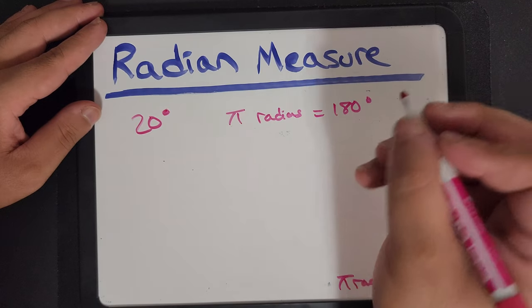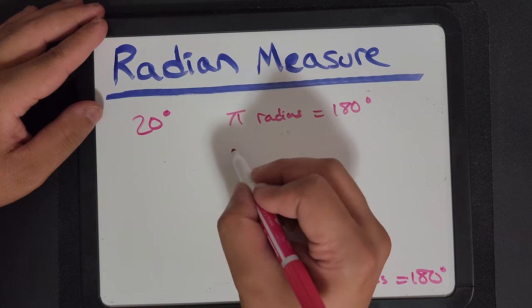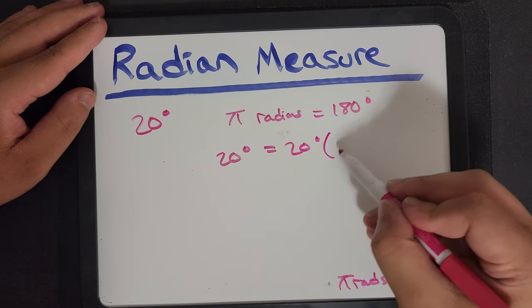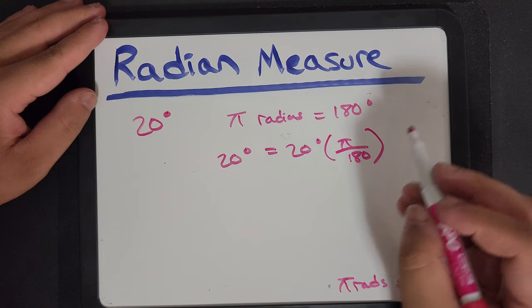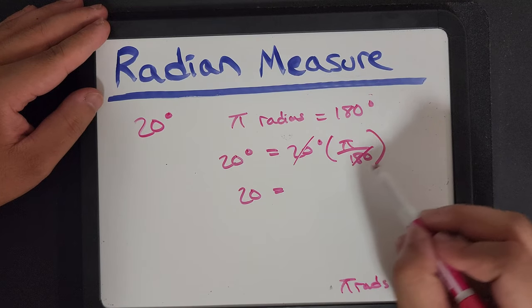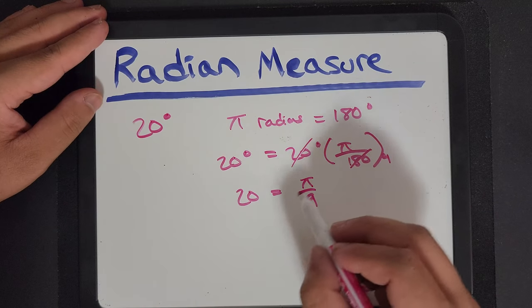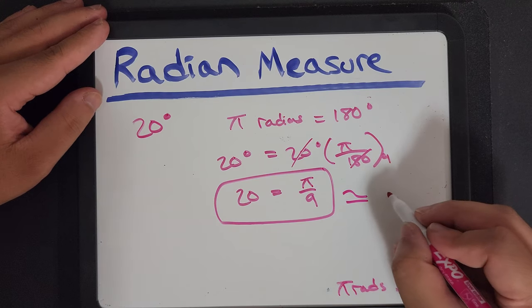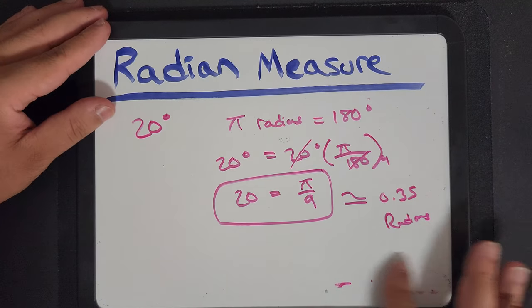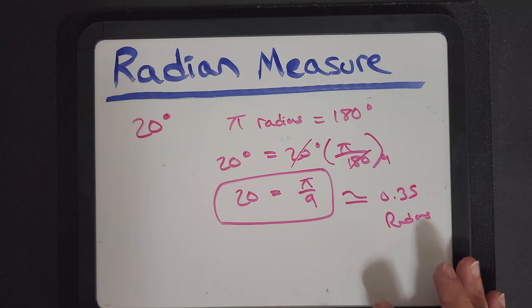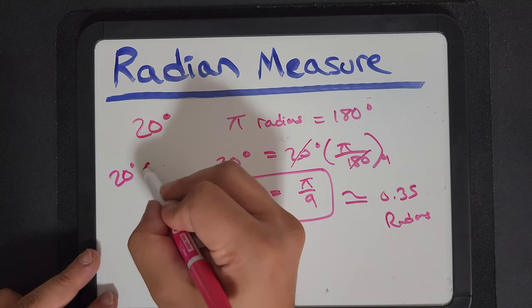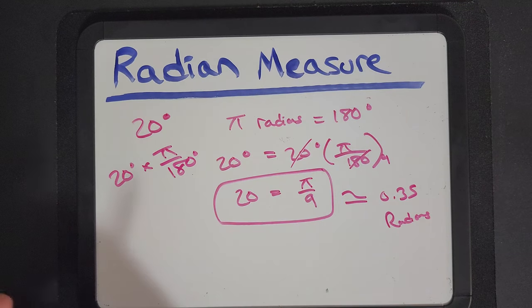Radians equal to 180 degrees. Then that means our 20 degrees is equal to 20 degrees times π over 180, which is equal to, well, this can become 9. So π over 9, or if you want to calculate 0.35 radians. So all we really did was multiplied by π over 180. And that gives us what it is in radians.